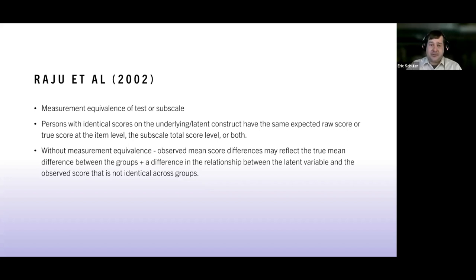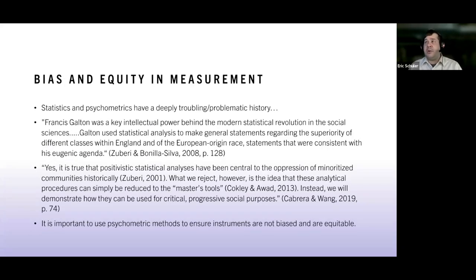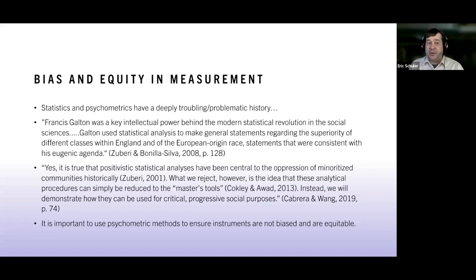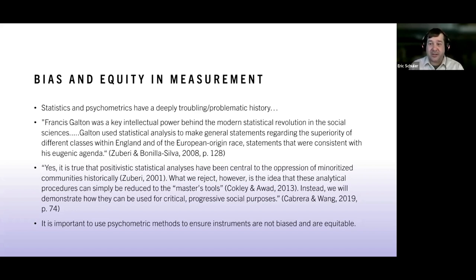A big-picture point on why bias and equity matter: psychometrics has a deeply troubling and problematic history. Francis Galton, one of the key figures in modern statistics, was trying to use statistical analyses to make general statements about the superiority of different classes within England — fitting his eugenic agenda. Not a good human being.